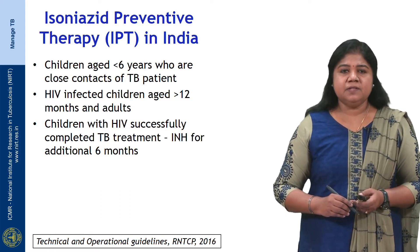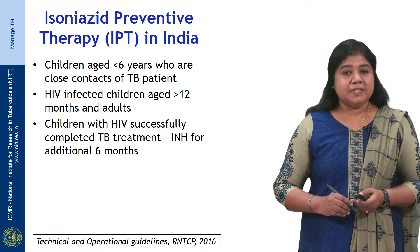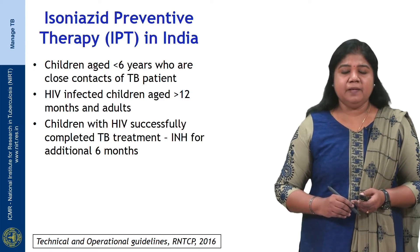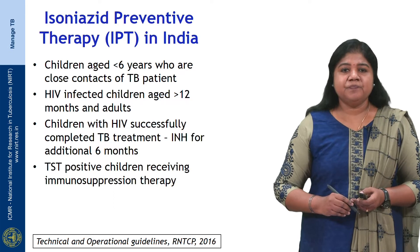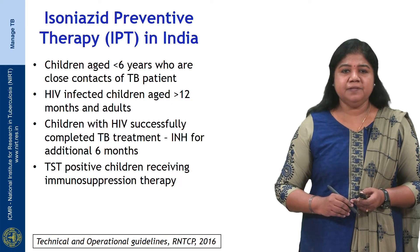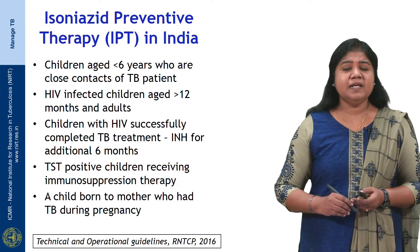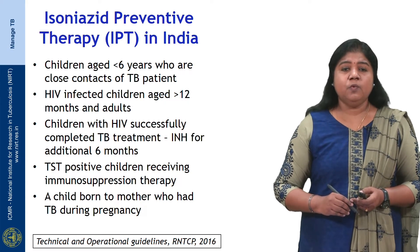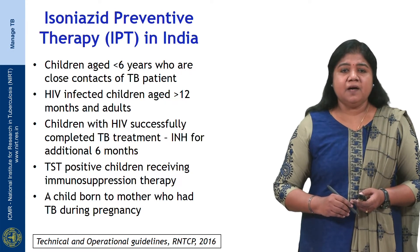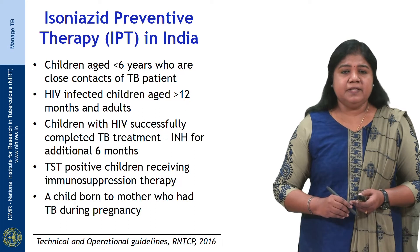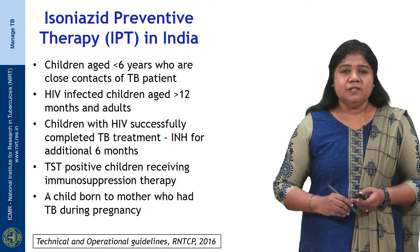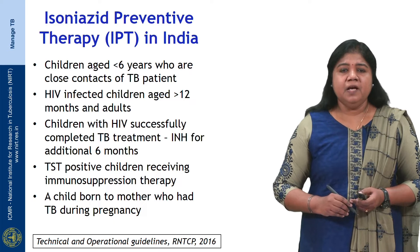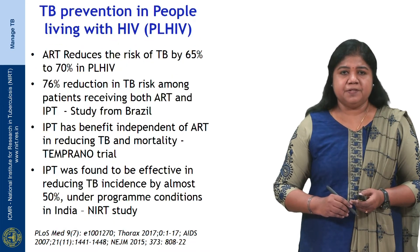Children with HIV who have successfully completed treatment can be given INH for an additional 6 months. TST-positive children receiving immunosuppressive therapy, and a child born to a mother who had TB during pregnancy after congenital TB is ruled out, should also receive isoniazid preventive therapy.